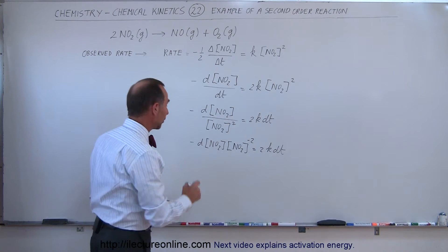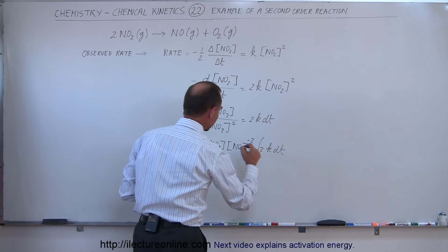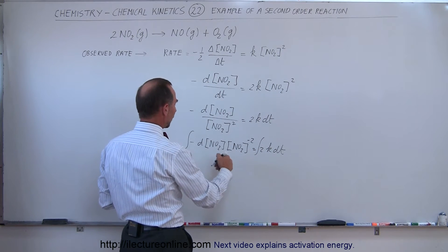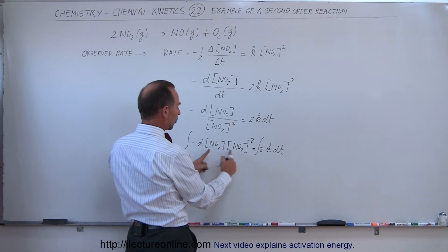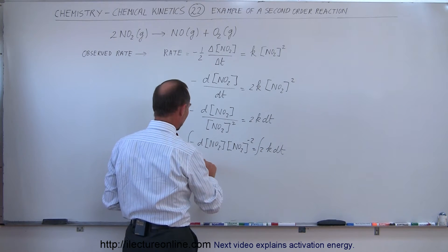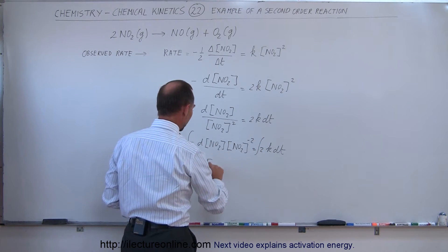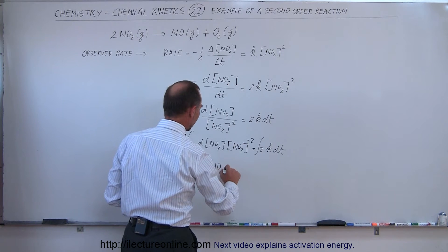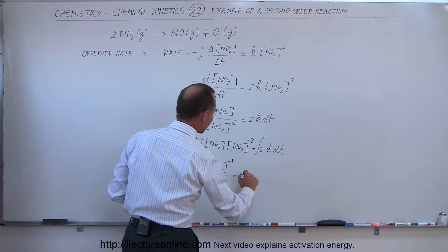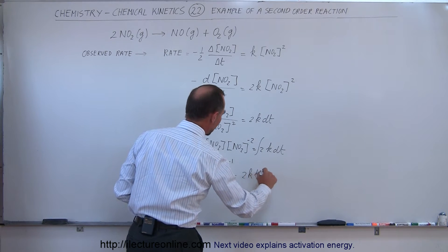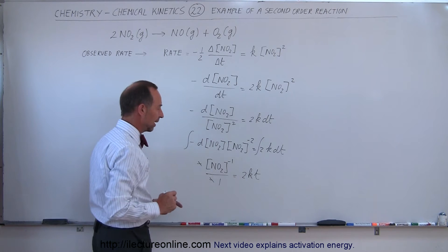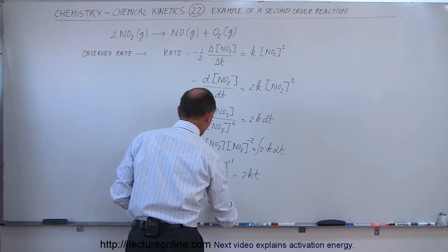Now we're ready to integrate both sides. We add one to the exponent and divide by the new exponent, giving us: minus the concentration of nitrogen dioxide to the minus one power, divided by the new exponent. This is equal to 2k times t.